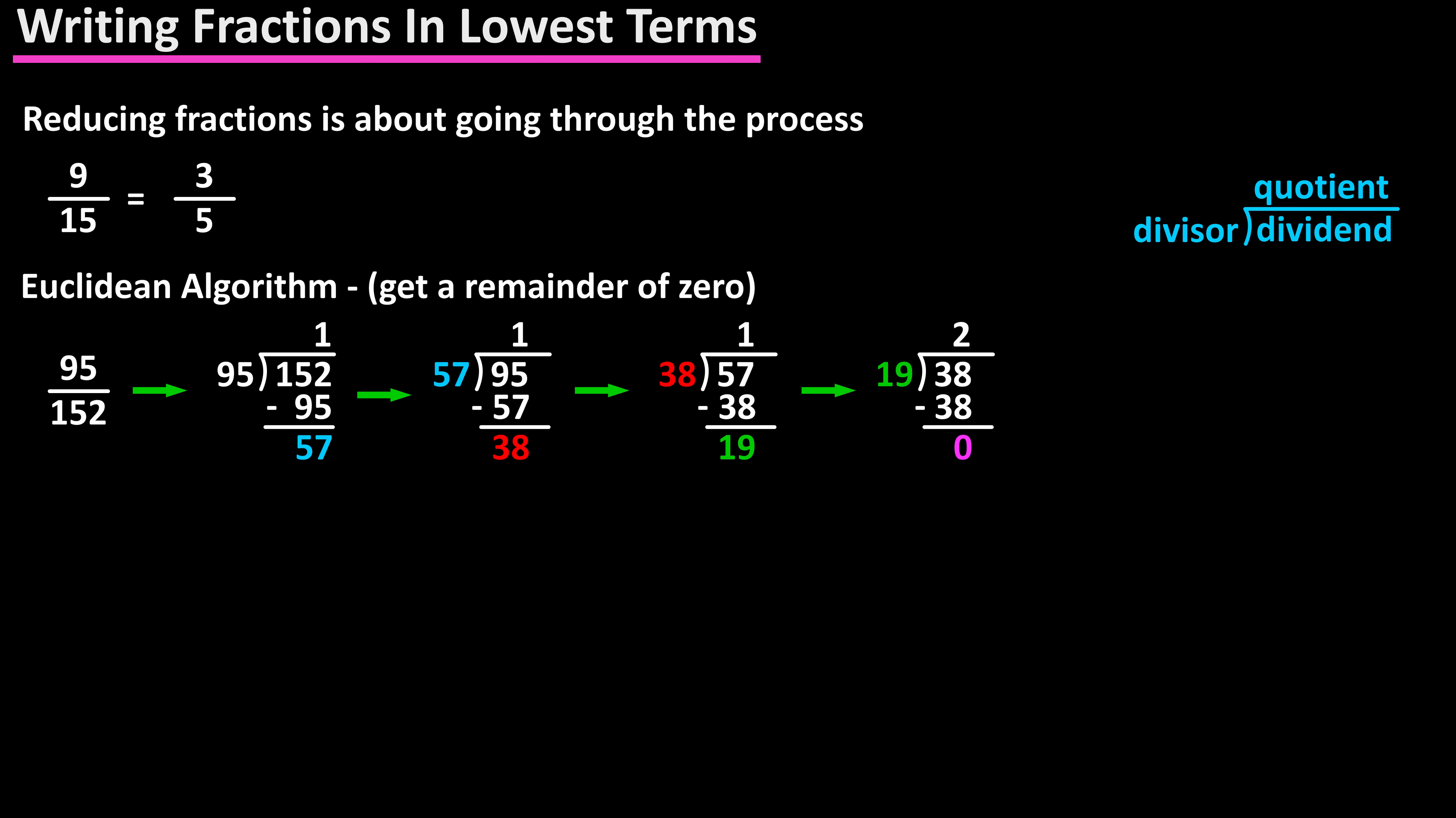Again, repeat the process: divide the remainder of 19 into the previous divisor of 38, and there it is, a remainder of 0. When we get a remainder of 0, that divisor is the greatest common factor.